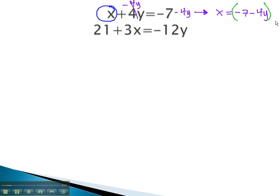This expression is what we can replace the x with in the other equation. We have 21 plus 3x, which is negative 7 minus 4y, equals negative 12y.